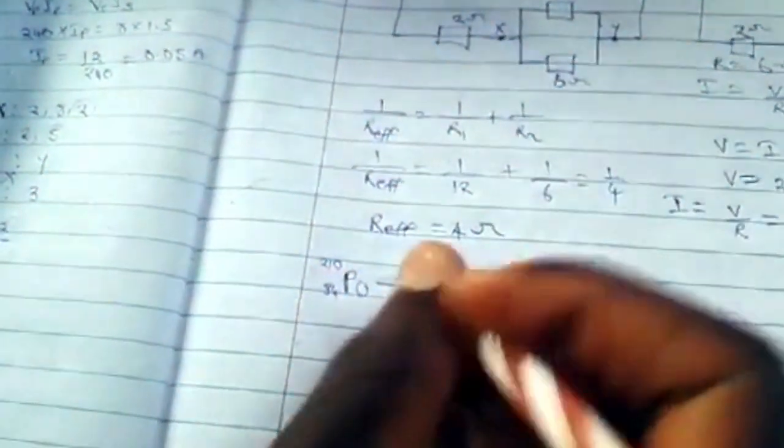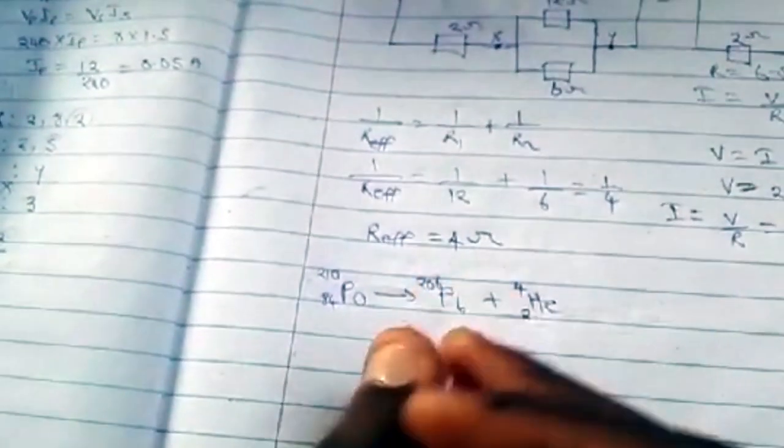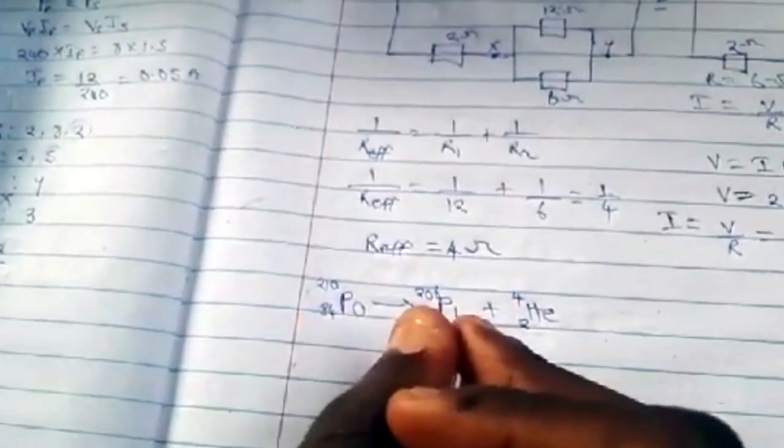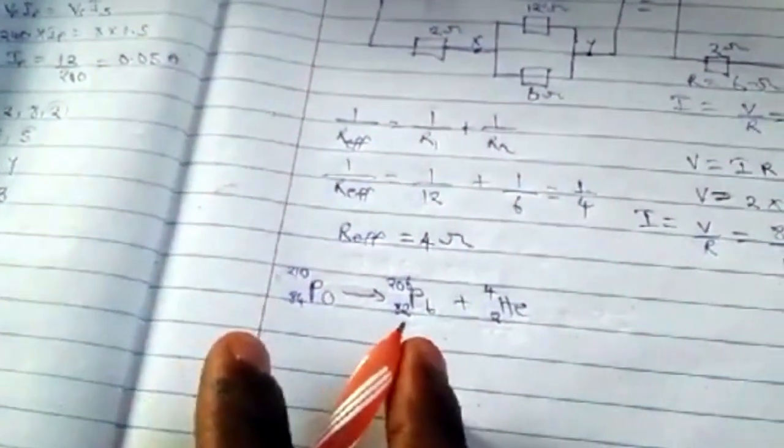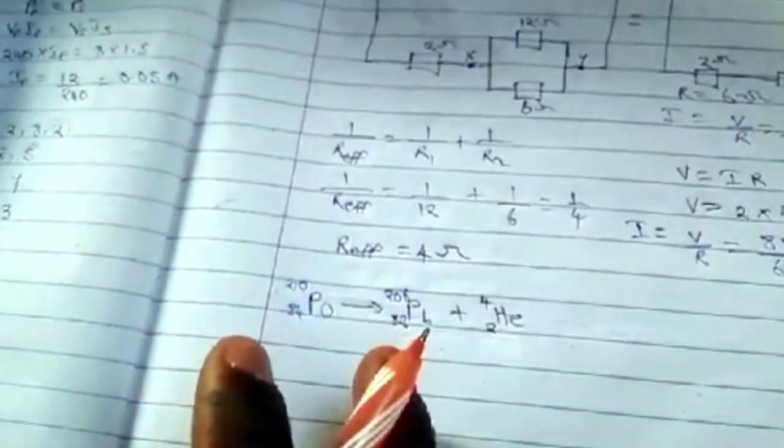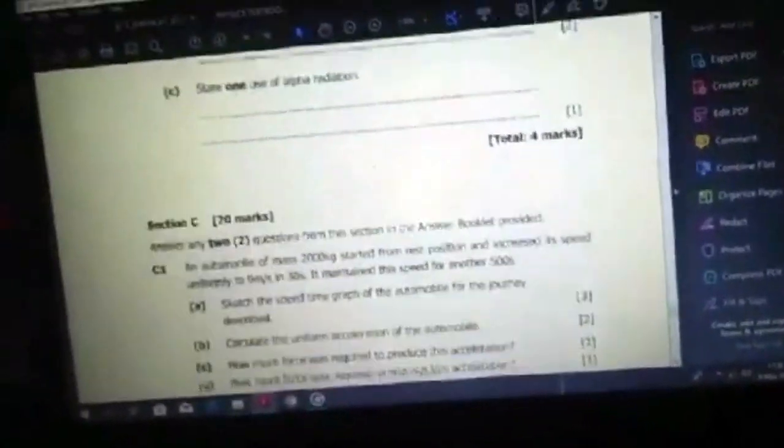This will be the radioactive decay of polonium. State one use of alpha radiation. Alpha radiation can be used to treat all forms of cancer in hospitals. It's one use of alpha radiation.